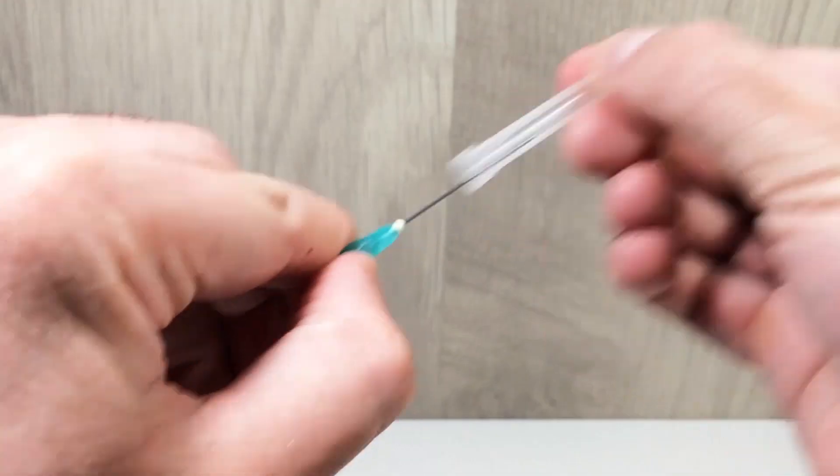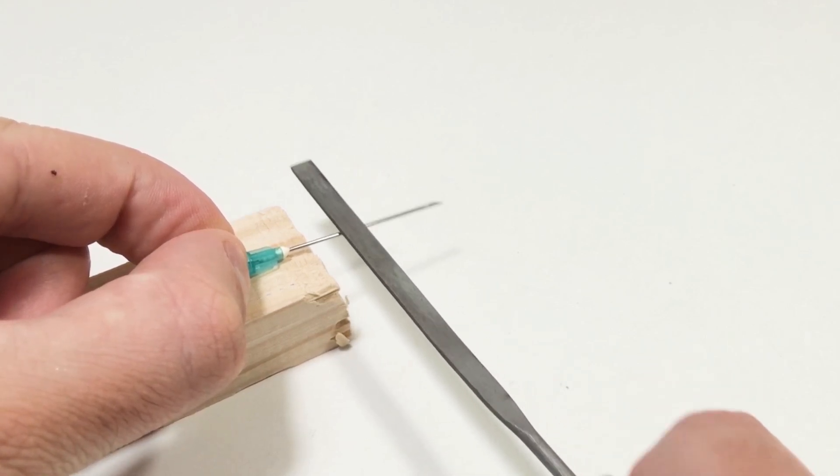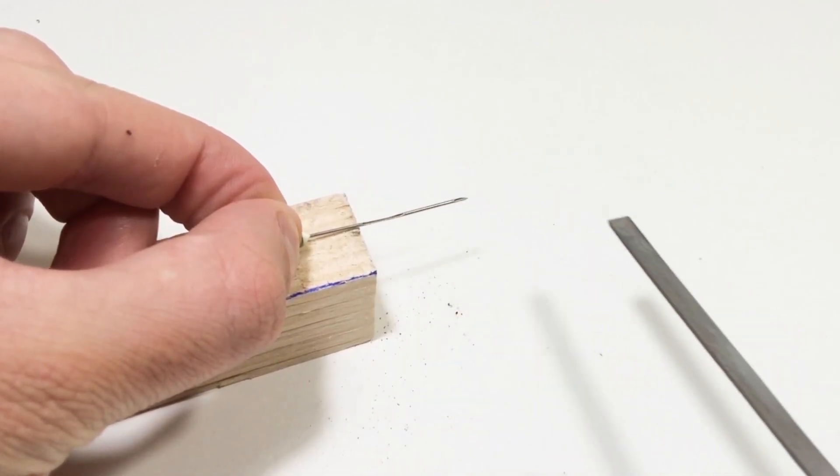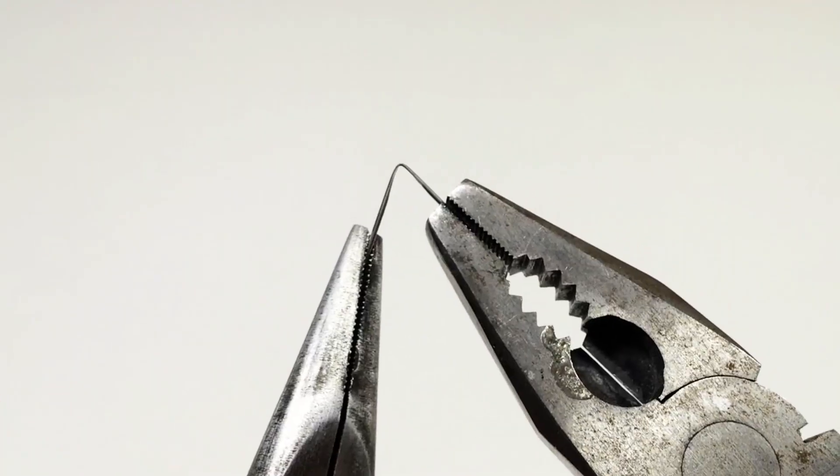Now let's make the heating element. For this, I take a syringe needle. Using a file, I make a small notch on the needle. This reduces the cross section of the metal and creates a hot spot where it will heat up the most. Then I cut off a section of the needle and bend it into a U-shape.